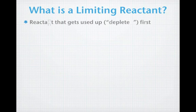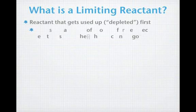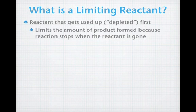A limiting reactant in a reaction is a reactant that gets used up, or we say depleted, first. When it gets used up, it ends up limiting the amount of product that's formed because the reaction stops when the reactant is gone.